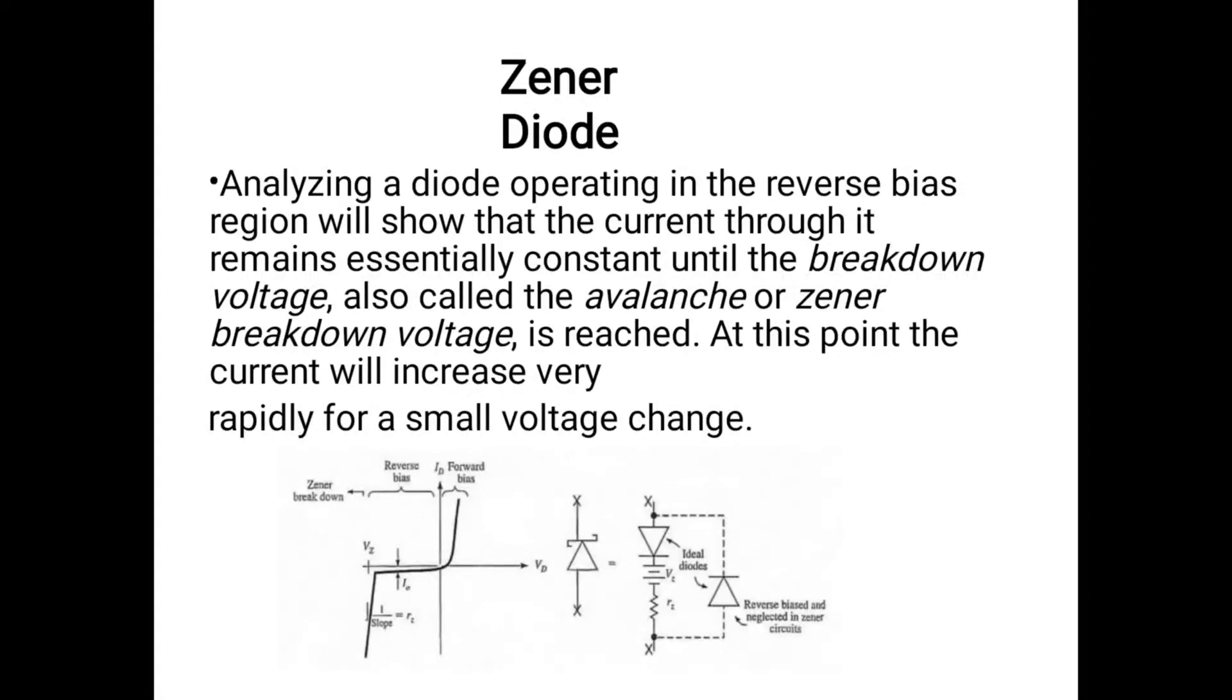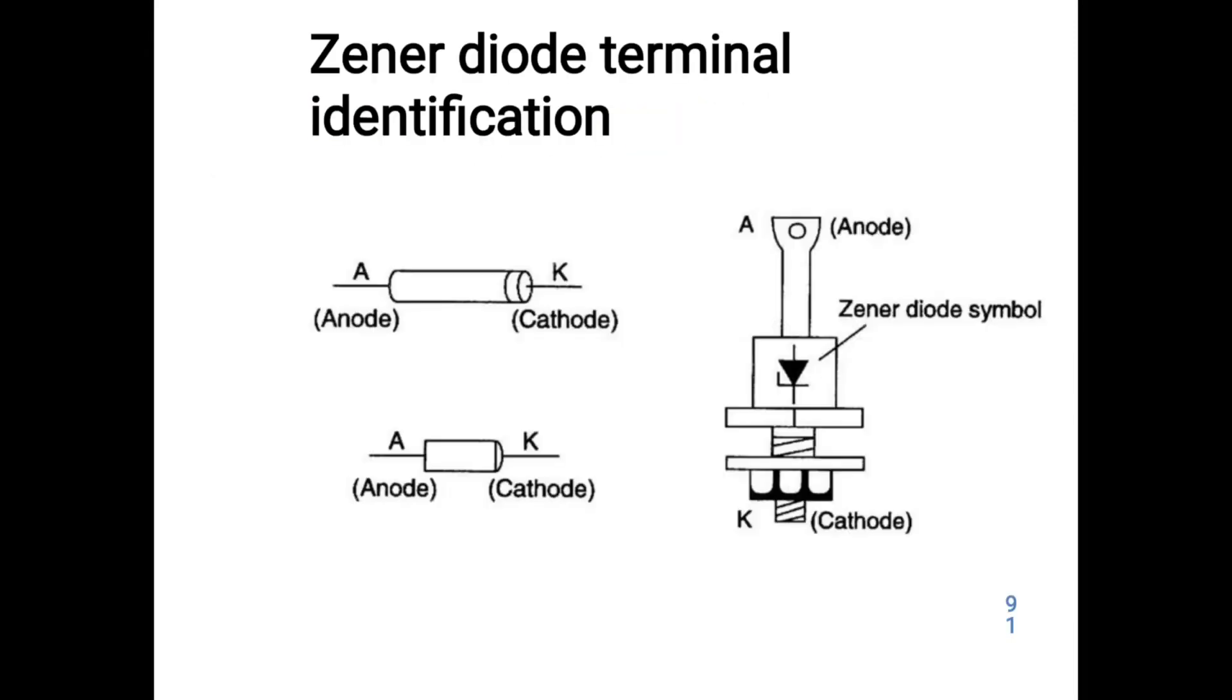Analyzing a diode operating in the reverse bias region, the current through the diode is utilized.